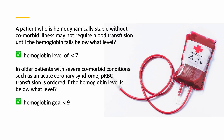What about blood transfusion? A patient who is hemodynamically stable without comorbid illnesses may not require blood transfusion until the hemoglobin falls below 7. In older patients with severe comorbid conditions such as acute coronary syndrome, blood transfusion is ordered if the hemoglobin level is below 9.